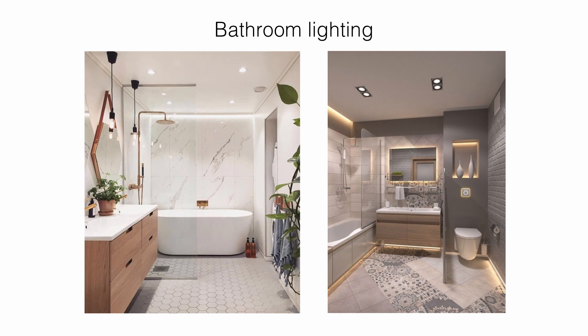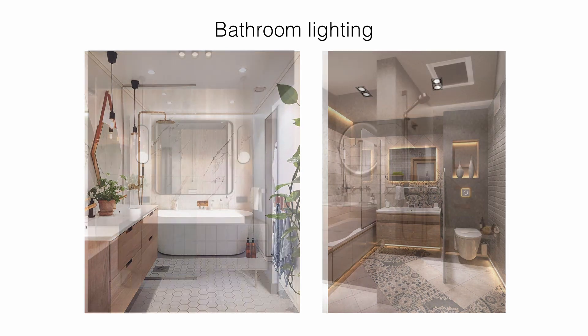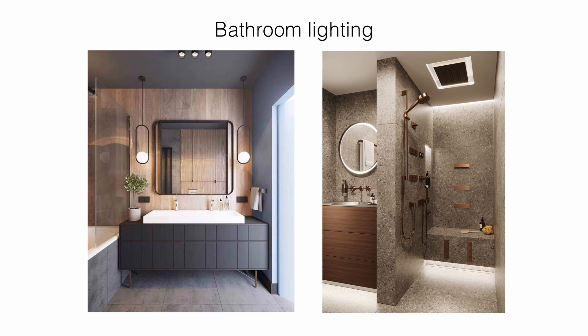Bedroom: where kitchens and bathrooms rely on bright, even lighting, bedrooms are all about comfort and coziness. For simplicity, add a ceiling light as the main fixture with a pair of bedside sconces and table lamps. For a more ornate look, add floor lamps, recessed lights, or track lighting to brighten up the room and add more focal points.